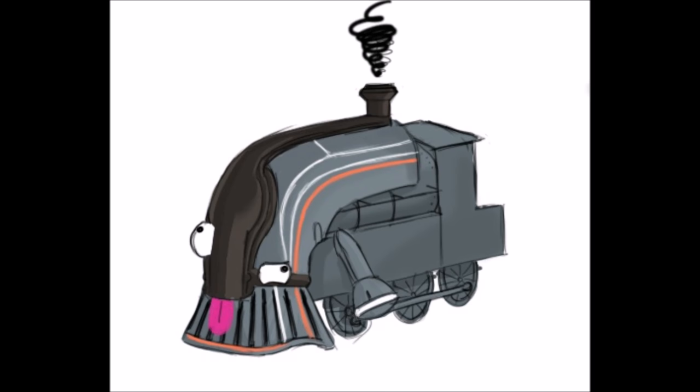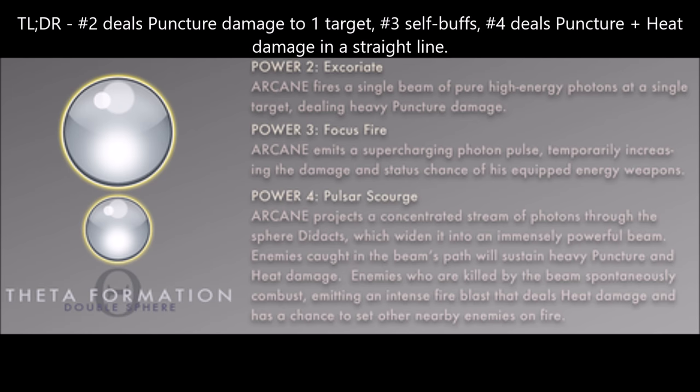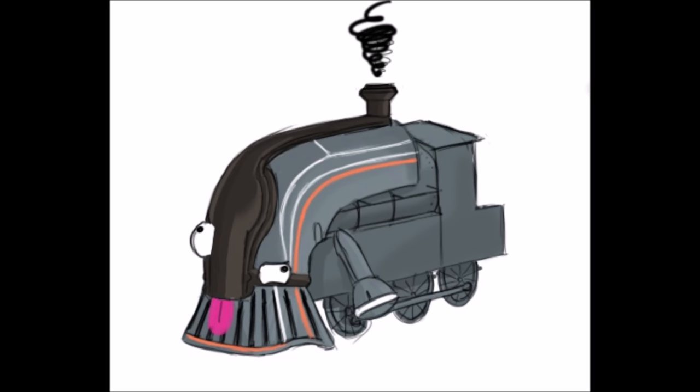Arcane's second ability set is Theta. Theta is Arcane's damage ability set. Theta comes with 3 powers: Excoriate, Focus Fire, and Pulsar Scourge. Excoriate deals massive puncture damage to a single targeted enemy. Focus Fire buffs the damage and status chance of Arcane's weapons, and Pulsar Scourge deals puncture and heat damage in a straight line, causing killed enemies to explode and have a chance of setting other nearby enemies on fire. As you can clearly see, the Theta set is no pushover when it comes to dealing damage. The potential of wiping out high amounts of enemies with Pulsar Scourge and then mopping up any stragglers with Focus Fire or Excoriate is there.